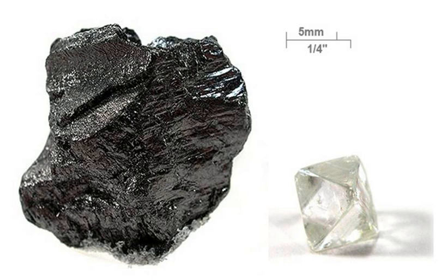The diamond supply chain is controlled by a limited number of powerful businesses, and is also highly concentrated in a small number of locations around the world. Only a very small fraction of the diamond ore consists of actual diamonds. The ore is crushed — during which care has to be taken to prevent larger diamonds from being destroyed — and subsequently the particles are sorted by density. Today, diamonds are located in the diamond-rich density fraction with the help of X-ray fluorescence, after which the final sorting steps are done by hand.